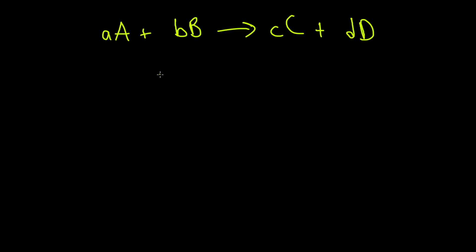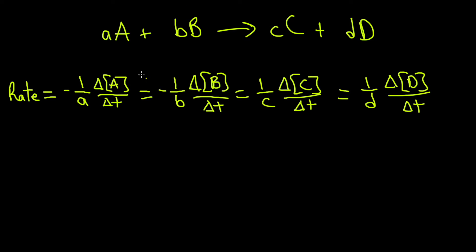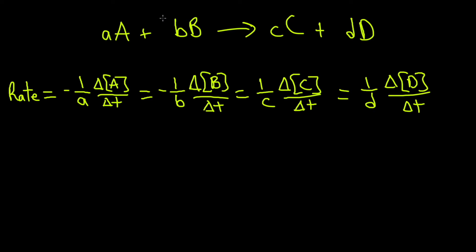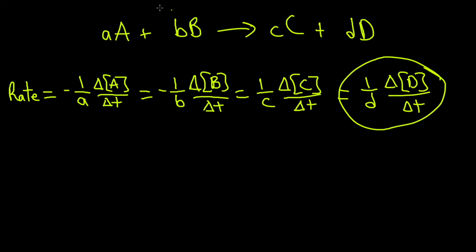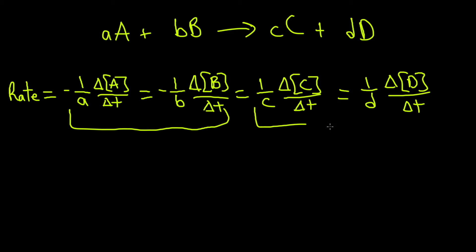Here is a general formula you can use. The capital letters are your elements and the lowercase letters are your coefficients. You can use any of these expressions depending on what is given to you. For example, if you're given the concentration of B at two different times and want to find the overall reaction rate, use the B expression. If given a product, use the product D expression to measure the overall reaction rate.